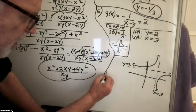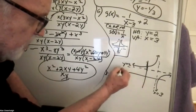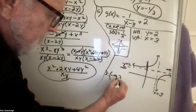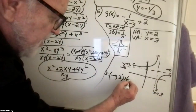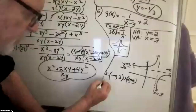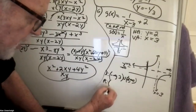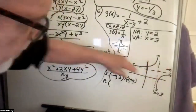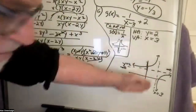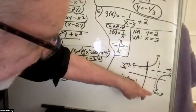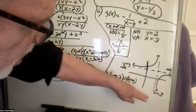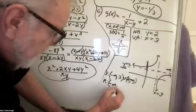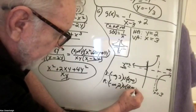The domain would be from negative infinity, stopping at the vertical asymptote, then picking up again from 3 to infinity. The range — the difference between domain and range is that domain goes left to right, while range gives values along the y-axis. The range would be negative infinity to 2, then from 2 to infinity. That was the entire problem.